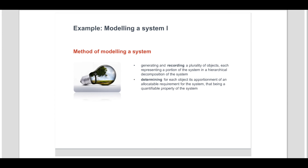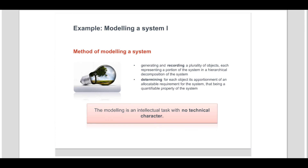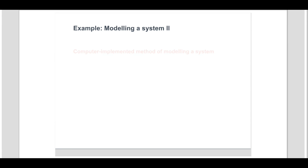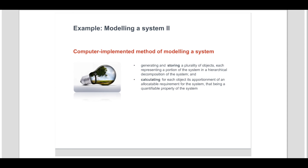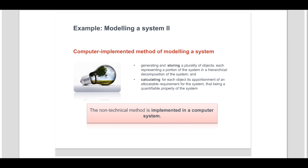Here, the method describes the steps necessary to carry out a modelling task. Although that modelling task is directed to a system which may itself be technical, the modelling per se is an intellectual task and as such lacks technical character. The method described in this example differs from the previous example in that the non-technical method is implemented in a computer system. The use of technical means such as a computer to carry out a non-technical method is sufficient to convey a technical character. It is noted that additional non-technical aspects of the subject matter cannot take away the technical character of the technical means.